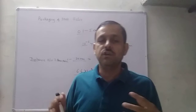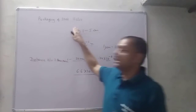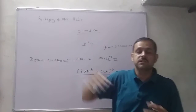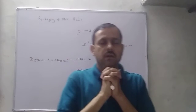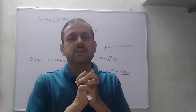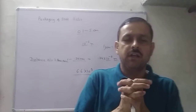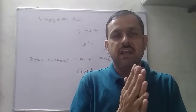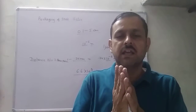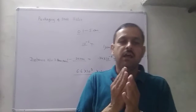तो इसके लिए अपना यह topic आजगा - packaging of DNA helix। अगर हम nucleus के chromatin material की बात करें, तो chromatin material में क्या होता है - एक तो DNA और दूसरा है histone protein।